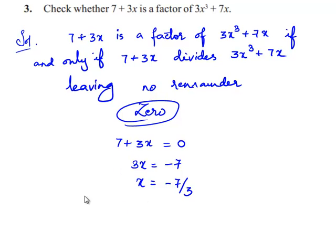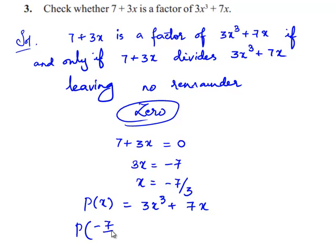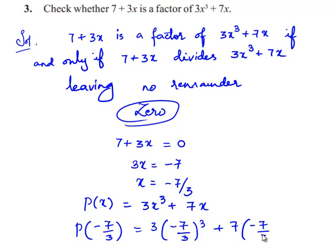Next, the given polynomial can be written in the form p(x) = 3x³ + 7x. Substituting the value of x, we get p(−7/3) = 3 times (−7/3)³ plus 7 times (−7/3).